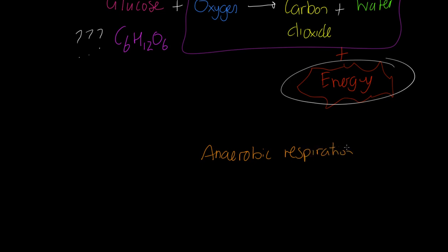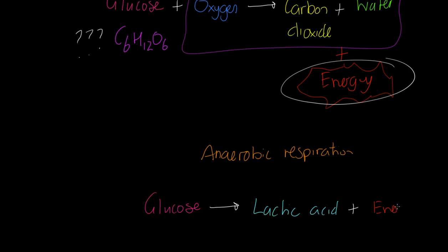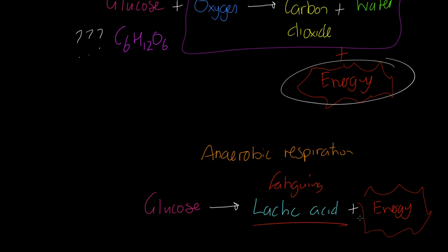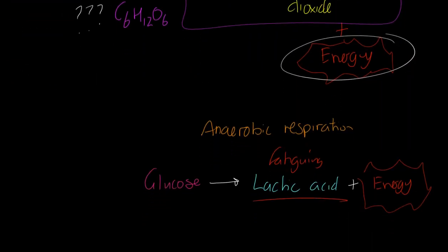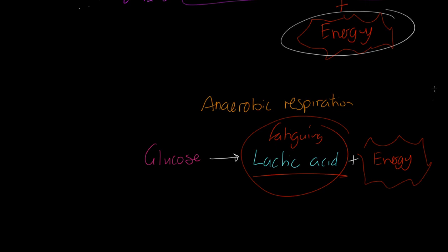Anaerobic respiration — the release or transfer of energy in the absence of oxygen. We still have glucose present in the cell, but without oxygen it goes to lactic acid plus the release of energy. Lactic acid is fatiguing — it negatively impacts the enzymes working in the muscle, which you'll know as denaturing from biology. That's why we can only sustain high intensity anaerobic activity for short durations: there's a fatiguing byproduct alongside the energy release.